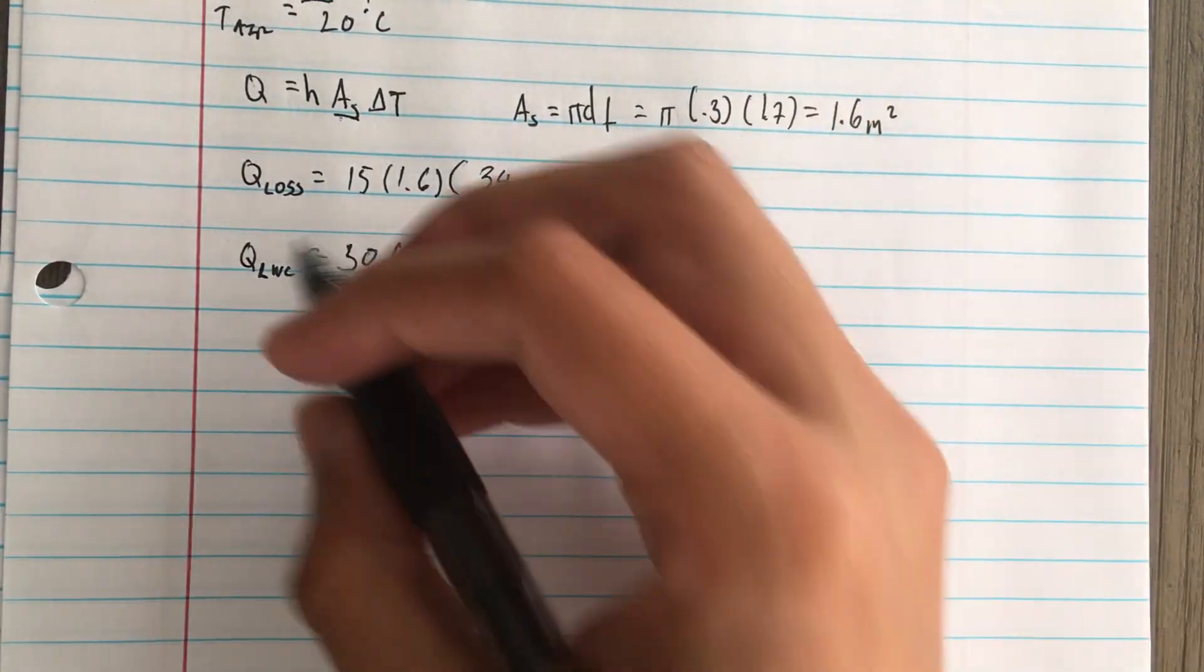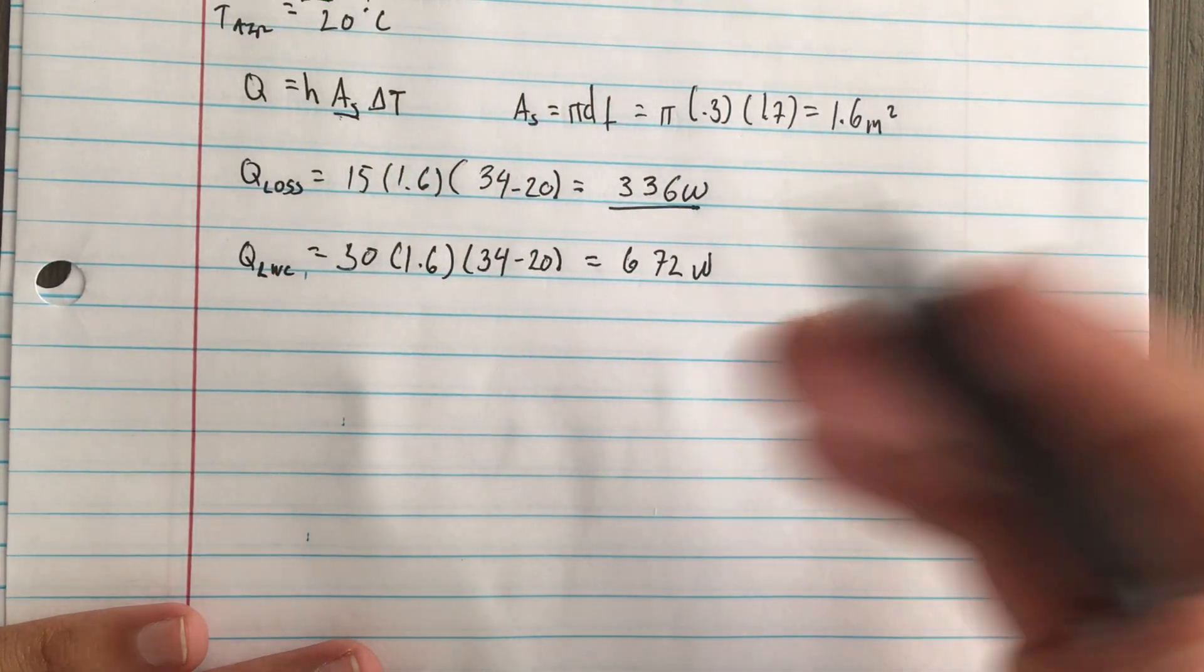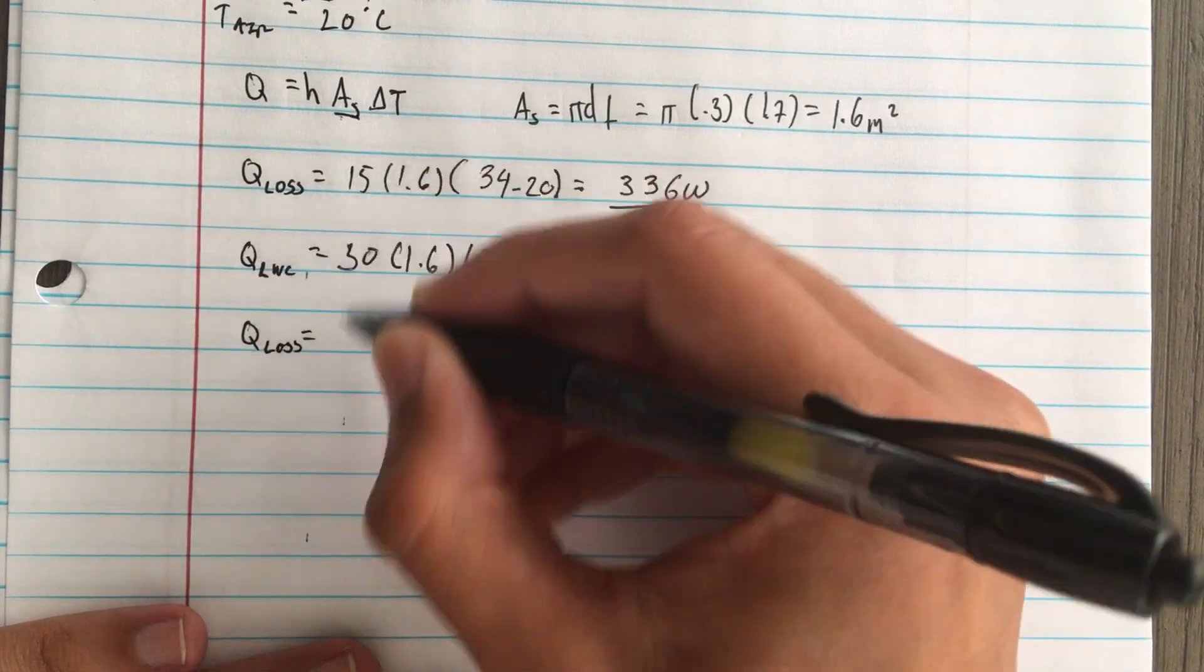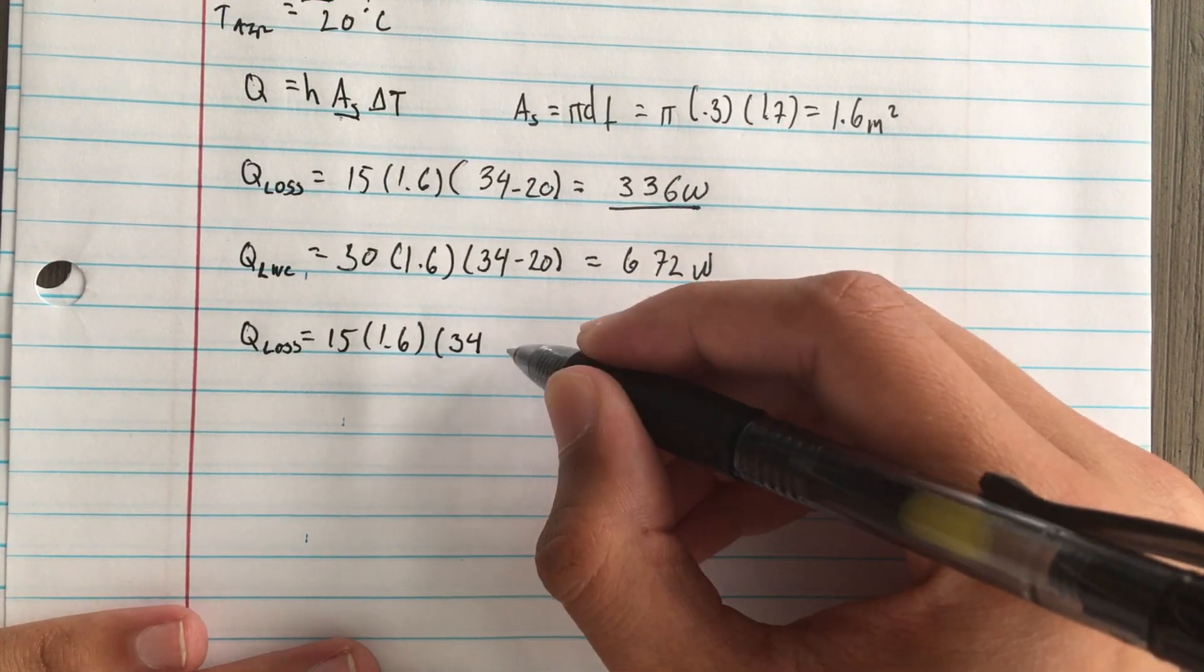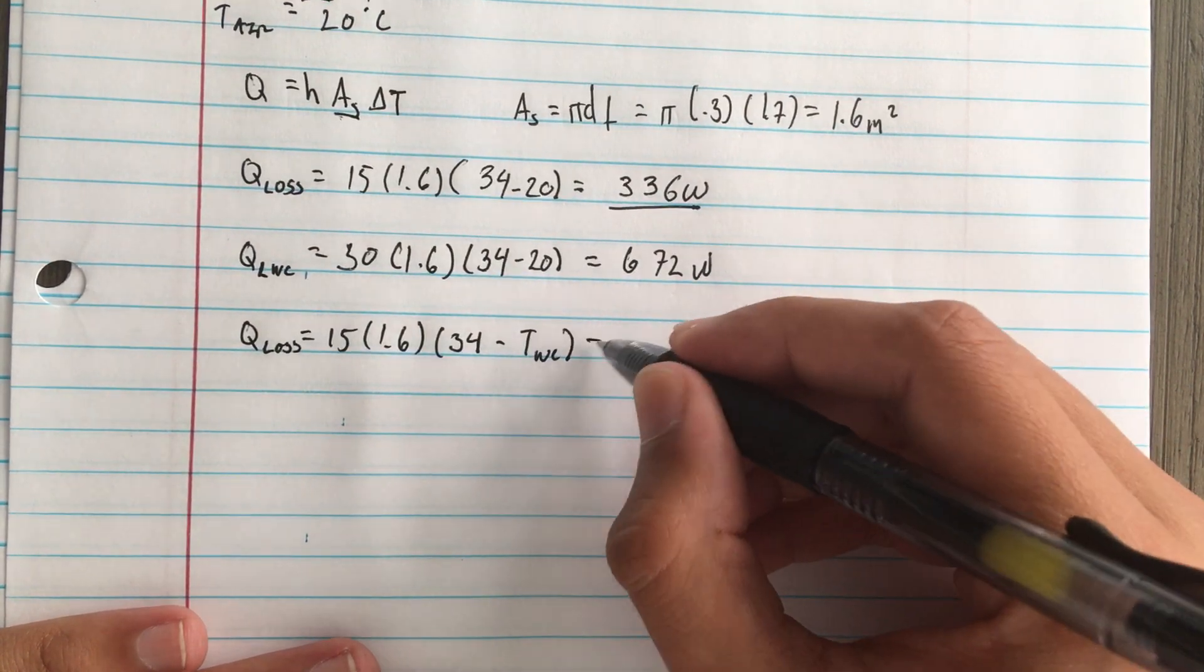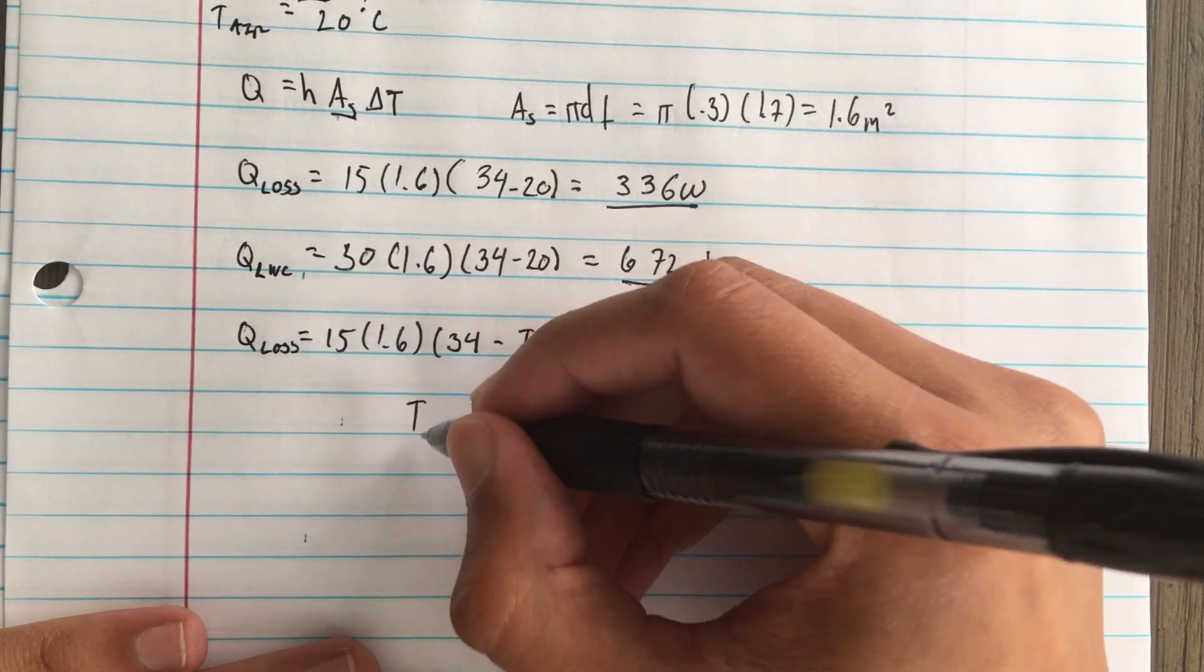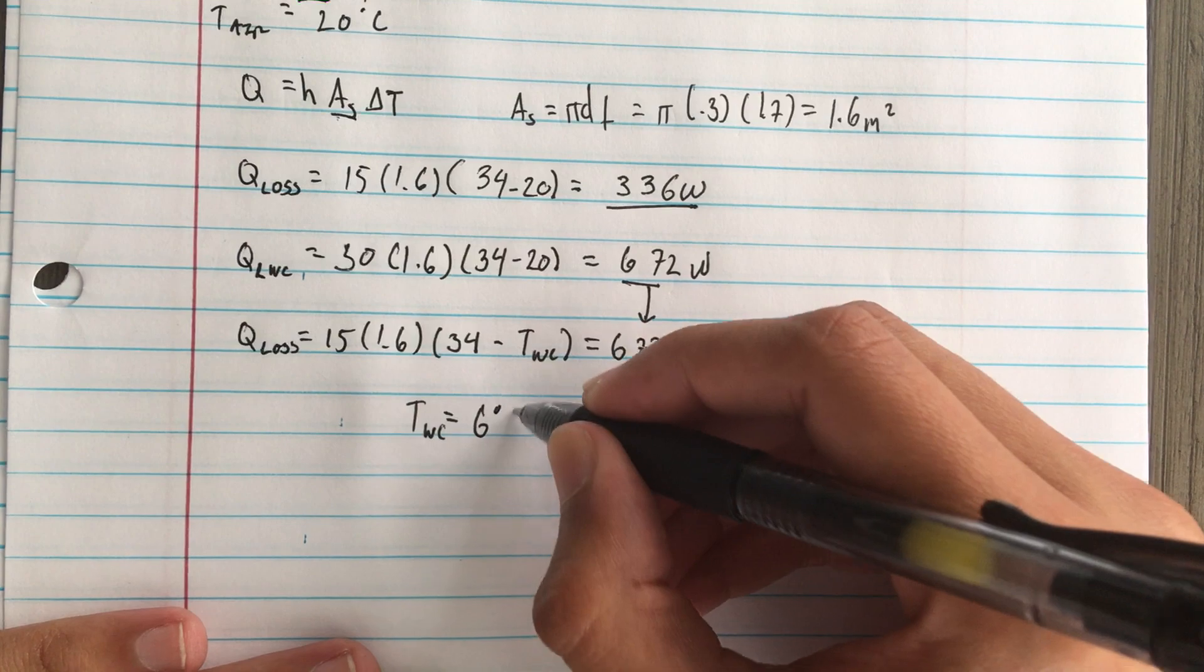So now we find what would be the temperature of the wind hitting the man. We come back and do 15 again, 1.6 because that stays the same, but here is where we find the temperature of the wind chill, and that equals this number, 672. Using algebra, the temperature of the wind chill we end up getting is 6 degrees Celsius.